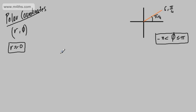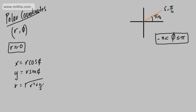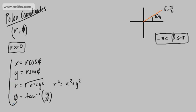Let's now look at working between Cartesian and polar form. x is given to be r cos theta. y is given to be r sin theta. From Pythagoras, r is given to be the square root of x squared plus y squared, or r squared equals x squared plus y squared. And theta is given to be the inverse tangent of y over x. If you can work with this, it makes things so much more straightforward.